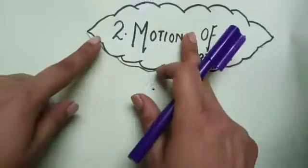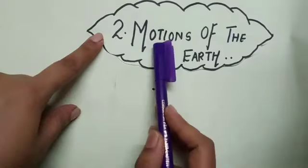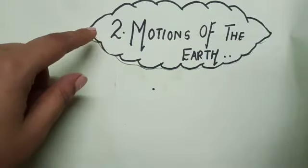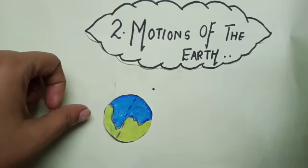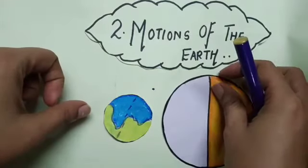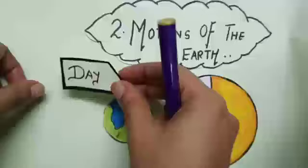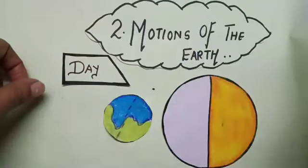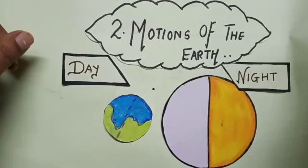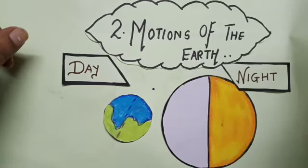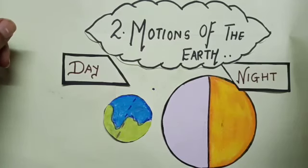Good morning children, welcome back. Last week we started with lesson number 2, motions of the earth. In that we studied about earth's rotation and revolution around the sun. We also studied the concept of daytime, nighttime, sunrise and sunset. Today we are going to continue with the same lesson and study some more concepts related to earth's rotation and revolution.